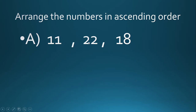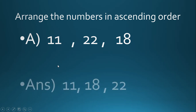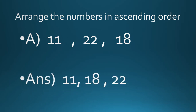The next question has three two-digit numbers: 11, 22, and 18. There is no single-digit number, so we check the tens place. Comparing 11 and 18, the tens digits are both 1 — they are equal, so we check the ones place. The ones digits are 1 and 8, which means 18 is bigger than 11. For 22, the tens digit is 2, which is always greater than 1, so 22 is the biggest number. The ascending order is: 11, then 18, then 22.